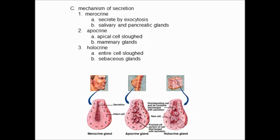There are other glands in which the whole apical portion of the cell is sloughed off, containing storage vesicles, and then it breaks up further. This is called an apocrine gland — large portions of the cell keep breaking off. This is the mechanism by which the mammary glands secrete. Finally, in holocrine glands, the whole cell itself that stores the product is periodically sloughed. The sebaceous glands in our scalp that keep our hair oily are this class of gland.